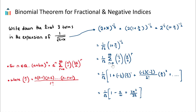Our third term is when r equals two. We have negative a half C two, which is negative a half times negative a half minus one, over two factorial. Negative a half minus one is negative three over two, so we get negative a half times negative three over two, all over two factorial. Then we multiply by x over two to the power of two. The two negatives multiply to give a positive; we get one half times three over two, which is three over four, then one over four from squaring x over two, giving three over sixteen, divided by two on the denominator, giving three over thirty-two times x squared.